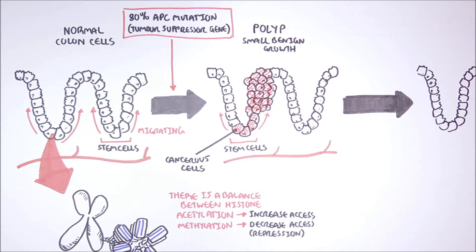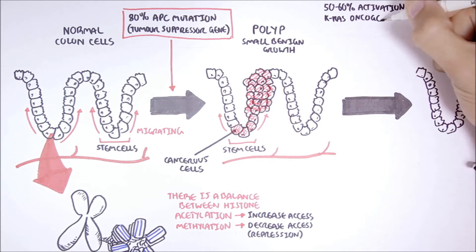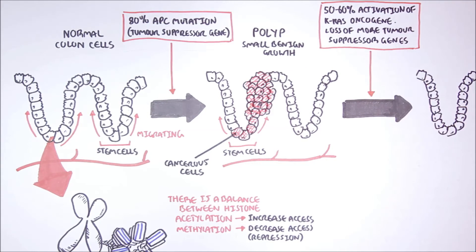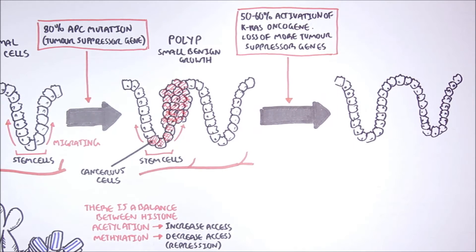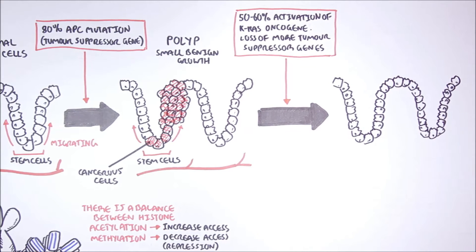However, with more mutations, such as in 50 to 60% of colon cancer cases, there is activation of the KRAS oncogene, as well as more mutations of other tumor suppressor genes. Now, the KRAS gene normally controls cellular division. However, a mutation of the KRAS gene results in a KRAS oncogene, and thus cell proliferation.